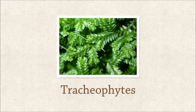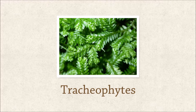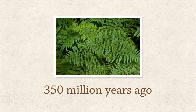Afterwards, seedless vascular plants came into existence. Their vascular system made it easier to transport nutrients and water throughout their bodies. Vascular plants are also known as tracheophytes. A great example of seedless vascular plants are ferns. They appeared around 360 million years ago.